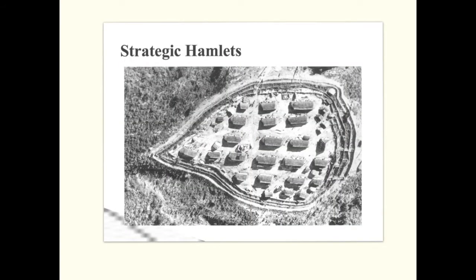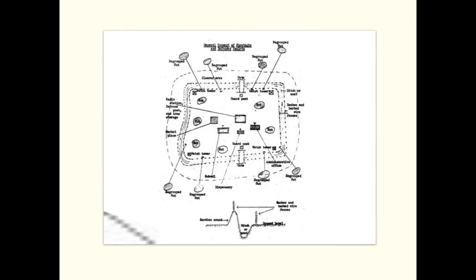Tactic number two was strategic hamlets. The aim was to cut off links between the NLF and the South Vietnamese peasants. US troops took peasants out of their own villages and placed them into strategic hamlets — areas surrounded by barbed wire and controlled by the Americans. About 40% of the population was treated this way, which made the Vietnamese hate the Americans even more.